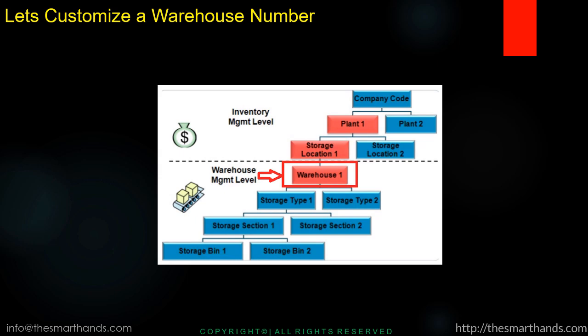Before we start, let us look at the WM org level in SAP. Here on the screen you can see the warehouse management level — the warehouse number. We're going to start by creating a warehouse number, and underneath that we will create storage types, then storage sections, and finally storage bins. We'll start with the warehouse number and once we create it, we will assign it to the storage location created in the previous video.